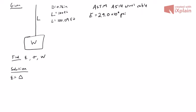Strain is equal to change in length divided by initial length, which is also final length minus initial length over initial length. So 100.09 feet minus 100 feet all over 100 feet gives us a strain of 0.0009.